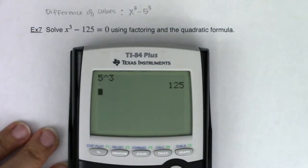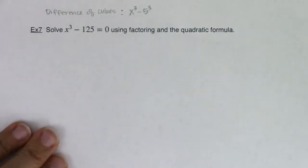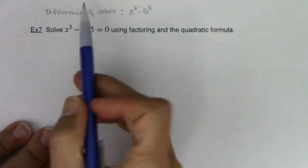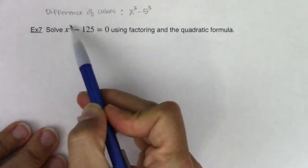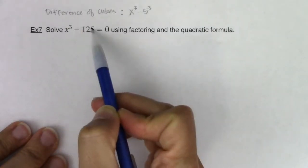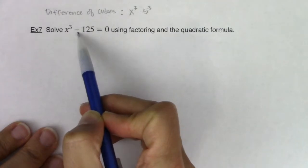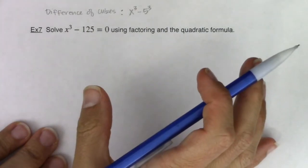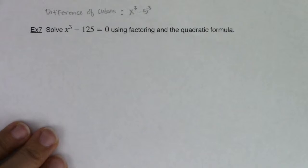So 5 raised to the third power is 125. So when I say difference of cubes, this is a cubed term, this is a cubed term, and I'm subtracting them. So I'm looking at their difference. So there is a formula for factoring a difference of cubes.